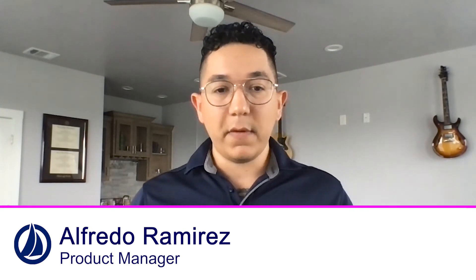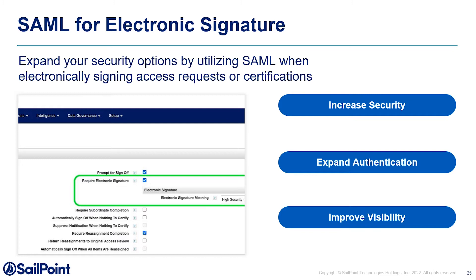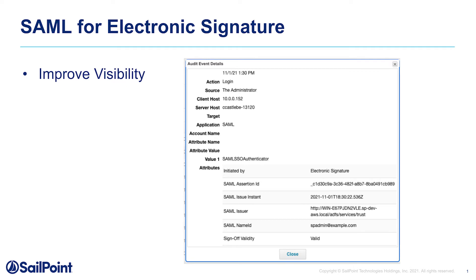Thanks for your participation in these polls. I'll now turn it back to Alfredo to cover the remaining features of 8.3. A good portion of our customers operate in highly regulated verticals like government, healthcare, and finance, and are using electronic signatures on top of their certifications and approvals. To meet compliance and increased security needs, many companies need to use alternate authentication types. So we are enhancing eSignature to be able to use SAML for these use cases. Utilizing SAML, electronic signature can now expand authentication options to include smart cards, common access cards, QR codes, or biometrics. Audit event details have been added to make it easy to review when these critical requests have been made. Prior to this update, IdentityIQ used username and password for electronic signature only. Now with IdentityIQ 8.3, configure SAML authentication in IdentityIQ and that method will be used by default for electronic signatures as well.